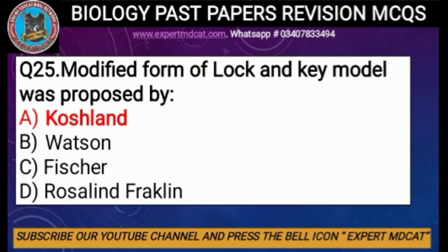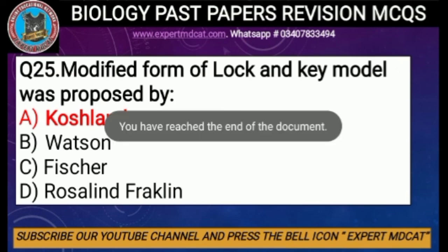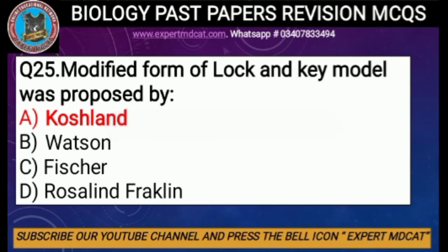Question number twenty-five: which modified form of the lock-and-key model was proposed by whom? The modified form is called the induced fit model, proposed by Daniel Koshland in 1959. The correct option is A. Thank you so much — this was all from today's discussion. Hope it's clear.